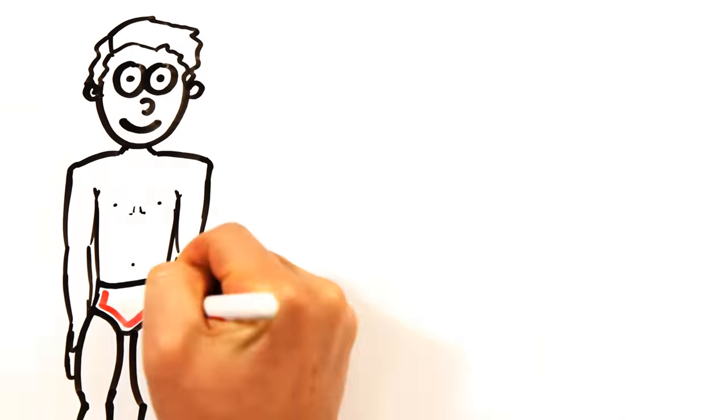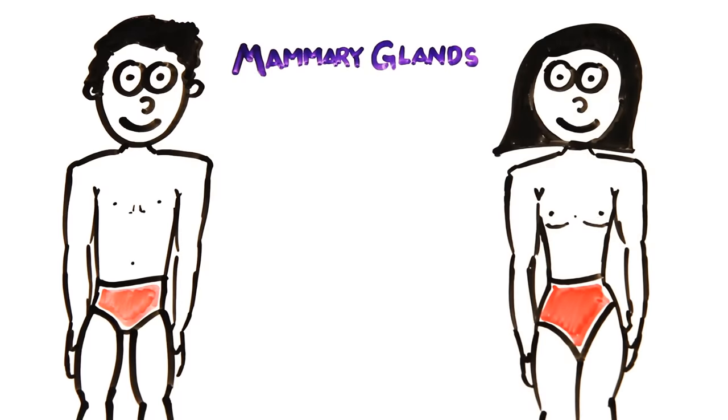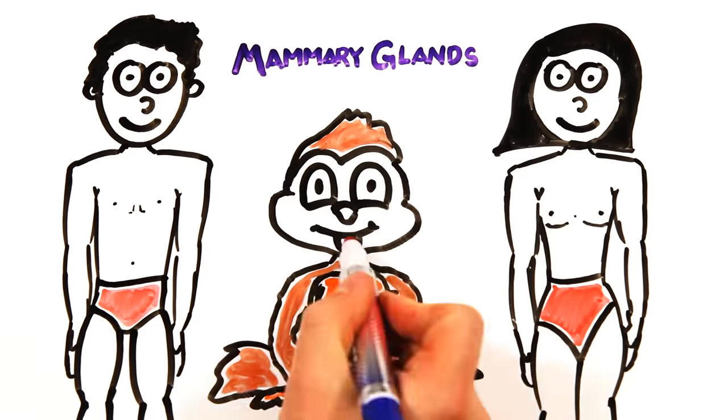Both men and women have nipples and mammary glands, but usually only women have them develop at puberty. This characteristic is uniquely human, as other mammals' breasts only enlarge during nursing.